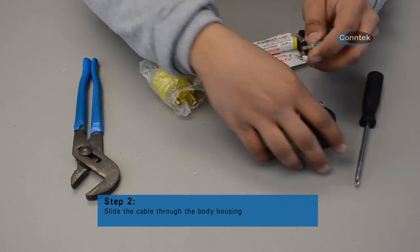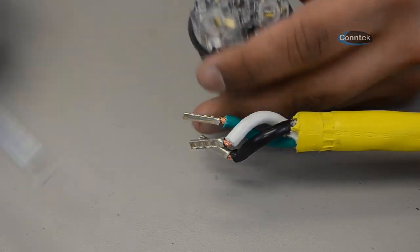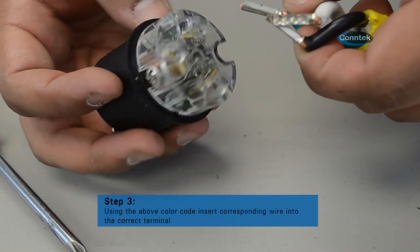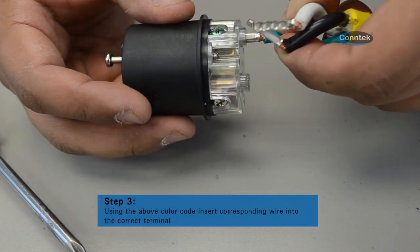In step three you will begin the wiring process. You will be inserting the corresponding wires into the terminals. Be sure to reference our wiring diagram that comes packaged with all of our Conteck assembly products.